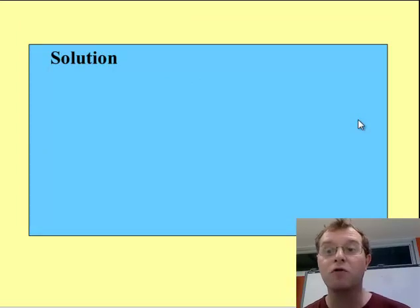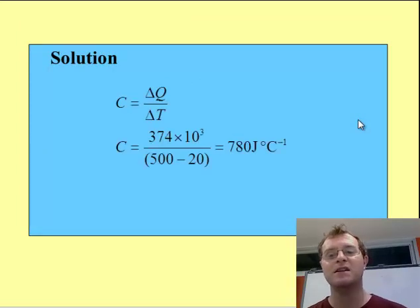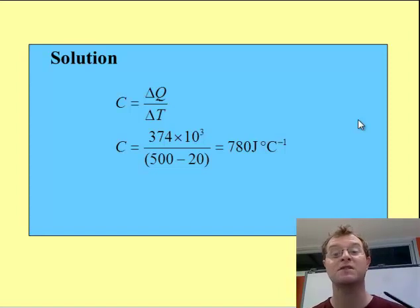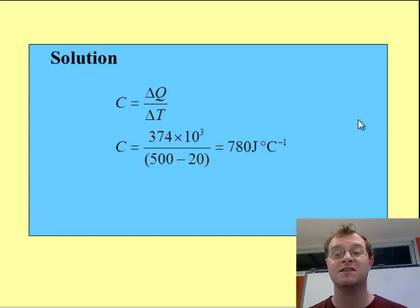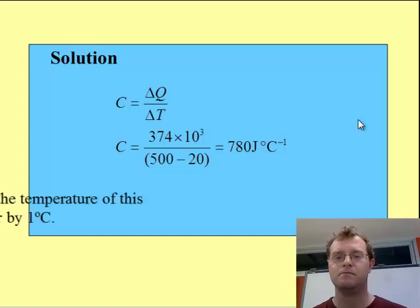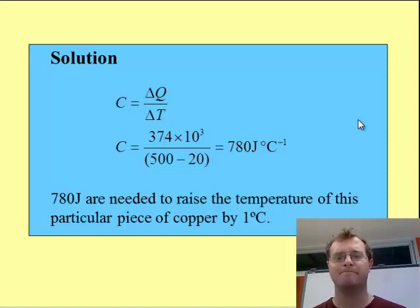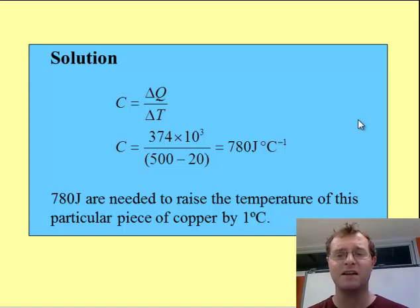Considering what we already know, we can place in the change in temperature, which is 480, and the amount of energy which went in, which is 374 times 10 to the 3, remembering it was kilojoules. That tells me that the thermal capacity is 780 joules per degree centigrade. So 780 joules are required to raise this object by 1 degree centigrade. That's thermal capacity.